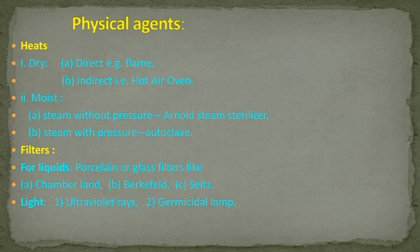Different physical agents are used for the sterilization of laboratory equipment or instruments. First physical agent is heat. Dry heat sterilization methods include direct and indirect types. For example, direct heat sterilization is done by flame — we use a spirit lamp to sterilize the inoculating needle at the time of isolation or subculturing.